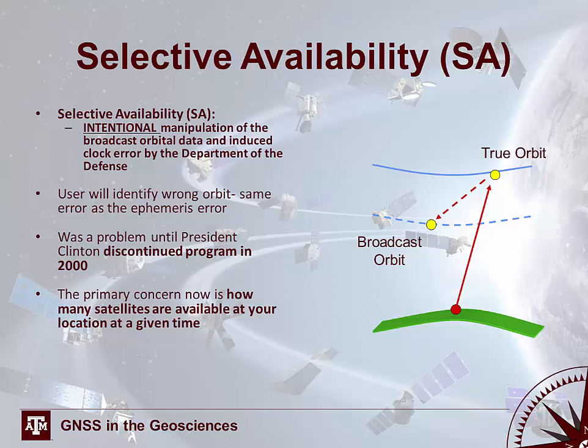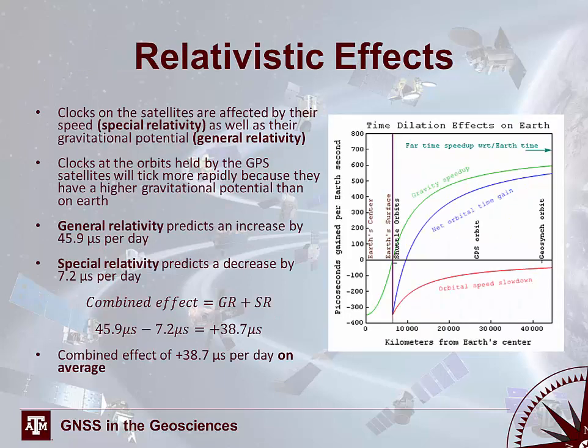Selective availability was a problem until 2000 when it was discontinued. The primary concern now is how many satellites are available at your location at any given time. There are also relativistic effects that affect the satellite clocks: general relativity causes an increase in time, special relativity causes a decrease in time. The combined effect results in a general increase in time per day on average, which must be accounted for when determining position.